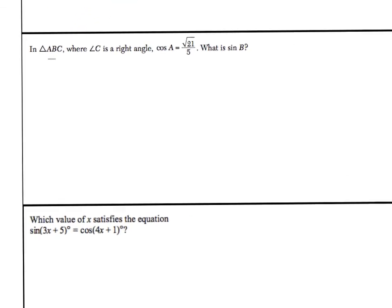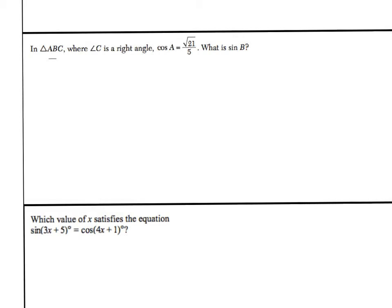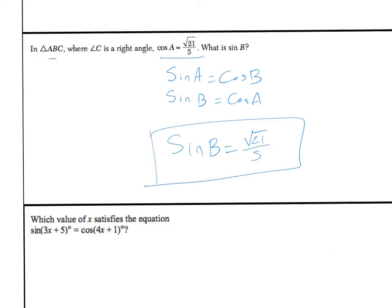Second problem: in triangle ABC where angle C is a right angle, cosine of A equals square root of 21 over 5. What is the sine of B? We use our formula — sine of A equals cosine of B, which can also be written as sine of B equals cosine of A. So if cosine of A is square root 21 over 5, the sine of B is equal to the same exact thing: square root 21 over 5.